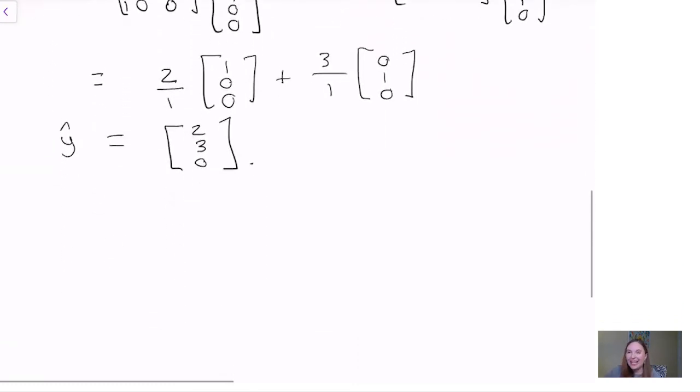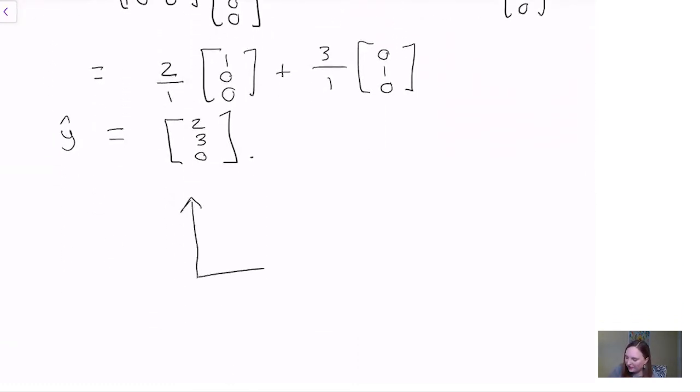And notice that that makes sense geometrically. We're looking at a picture in R3. We begin with a vector y, which is 2, 3, 4. And then we want to project it onto the xy plane. And we find that the projection is just the vector 2, 3, 0, which lives in the xy plane, and pretty clearly is the shadow of vector y on the xy plane or the vector in the plane closest to our original vector.